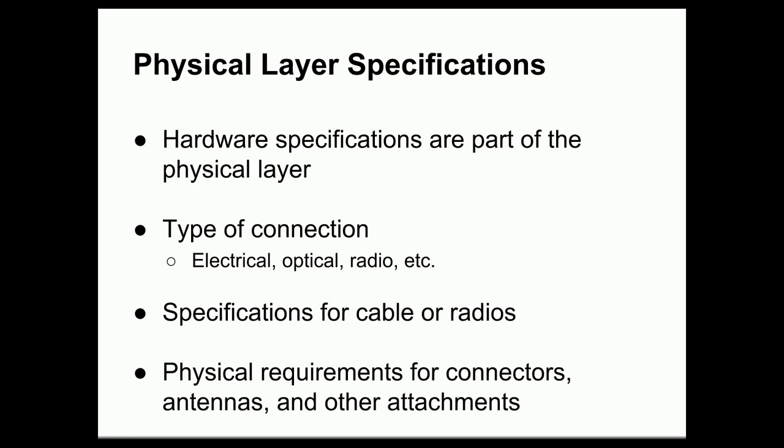Conceptually, in addition to providing the hardware, the physical layer also specifies certain properties of that hardware. Things we must specify include the type of connection — electrical, optical, or wireless radio — and specifications for the cable or radio being used. For example, modern Ethernet specifies twisted pair cabling; fiber optic specifies a type of fiber optic cable; and wireless networks specify a particular type of radio. We also need to give physical requirements for connectors, antennas, and other attachments. With wired Ethernet, for instance, there is a standard 8-pin plug. Without standard attachments, it would be extremely difficult and expensive to connect different devices together.